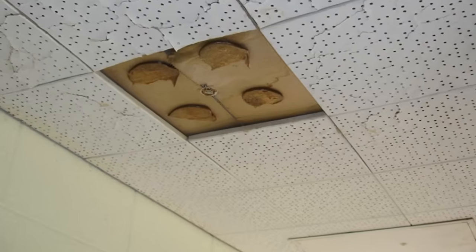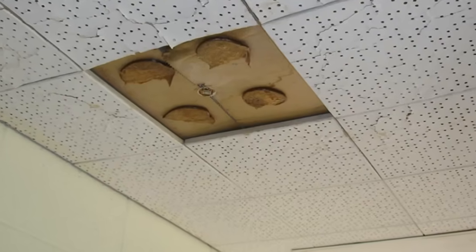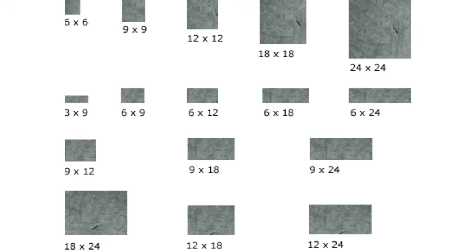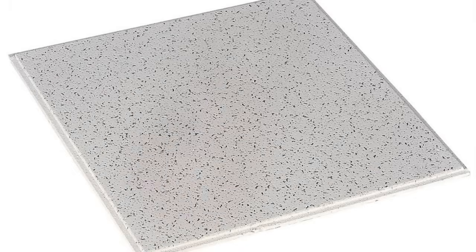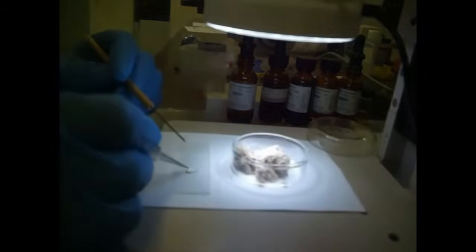One way to know that your house has asbestos ceiling tiles is that the products are 9 inch by 9 inch. These were the standard asbestos ceiling tiles during the last century. You may have a 9 by 9 inch ceiling tile that does not contain asbestos, which is why you should have a team of specialists analyze the products before deciding to do any remodeling in your house.